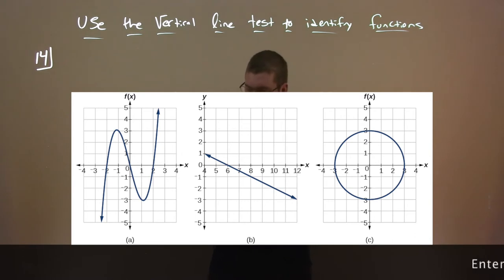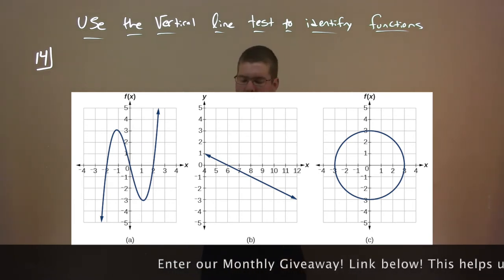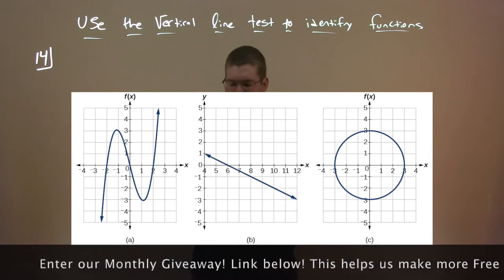Part B, though, we have a line that goes downwards, right, down to the right there. Again, any vertical line would go up and down would hit that function only once, and we're fine.